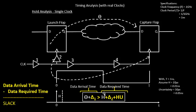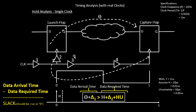In setup timing analysis, the requirement was that combinational delay theta should be less than T. But in the hold case, the arrival time is expected to be greater than the data required time, and the difference is referred to as slack. The slack is expected to be either positive or zero. If the slack goes negative, it is referred to as a violation — it means the data arrival is much before the data required time, meaning your combinational delay is very fast and you need to slow it down.